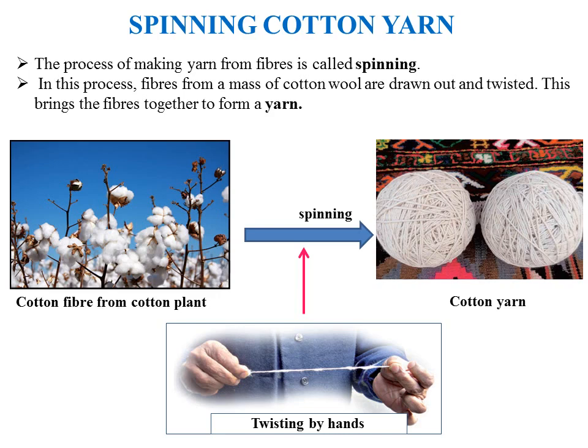Cotton fibers are brought together and made into yarn. Before making yarn, cotton fibers are twisted — due to twisting, fibers come close to each other and we get a long and strong string. The process of making yarn from fibers is called spinning.